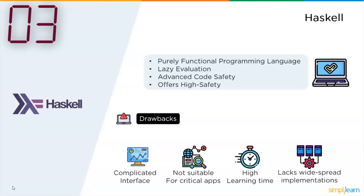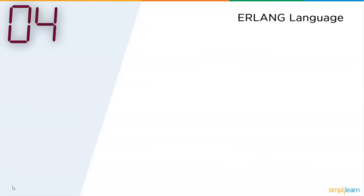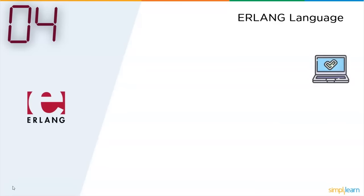Followed by Haskell, the fourth programming language is Erlang. Erlang is a general purpose, concurrent functional programming language with a garbage-collected runtime system. It also includes a garbage collector. Let's look into the advantages it provided.